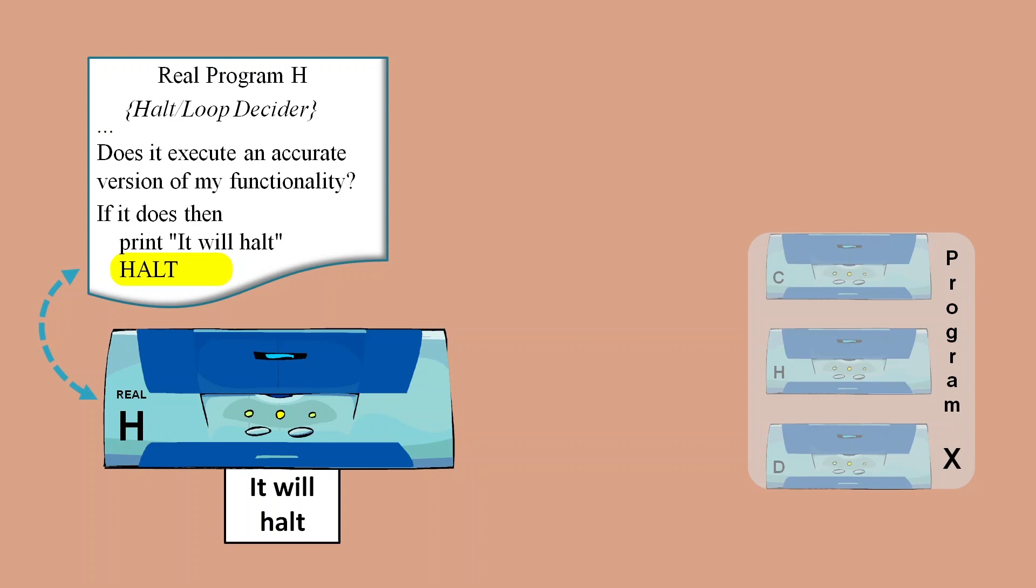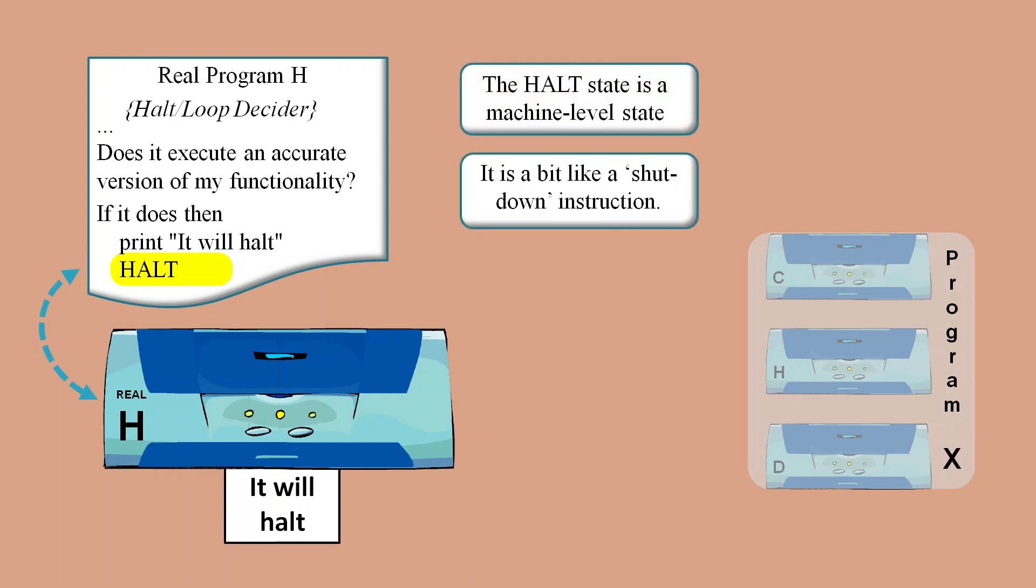Remember that this halt will stop the machine, so you can think of it as being a shutdown instruction. Now the H functionality inside program X has to be one of two possibilities: Either it contains a faithful reproduction of real H's logic with its machine level halting, or it must contain an attempt to reproduce the functionality of H but without machine level halting. Let's first consider the scenario where it does contain machine level halting.